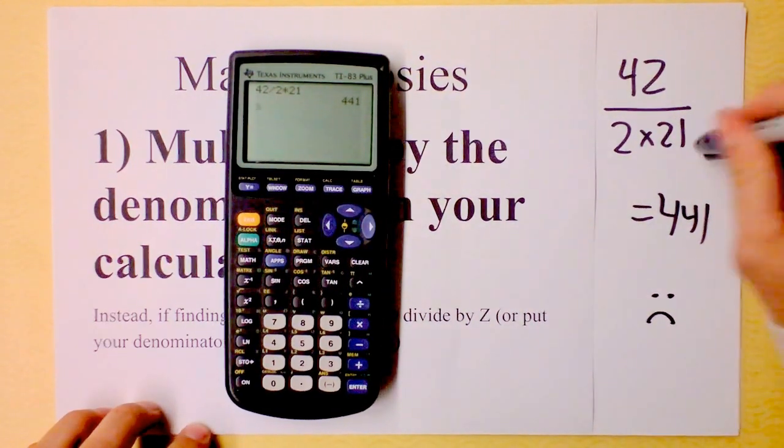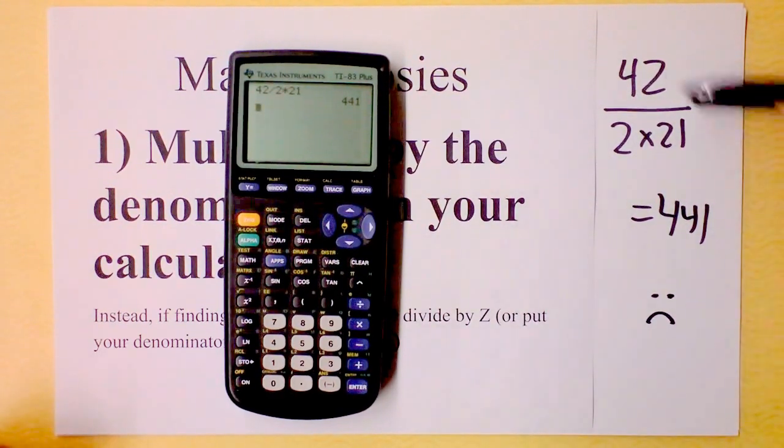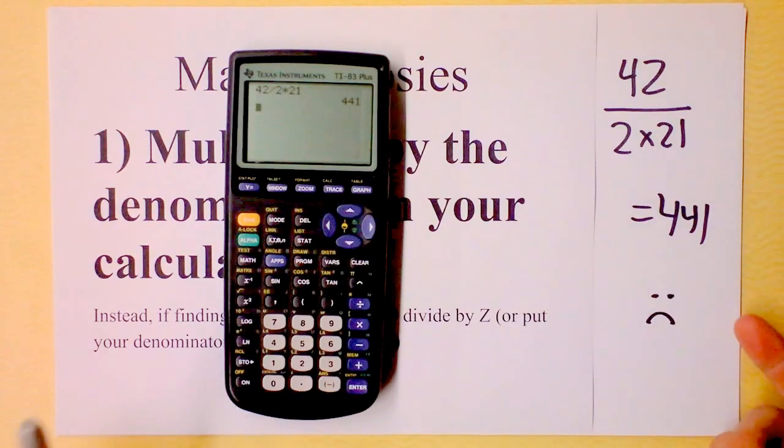It's supposed to be, well, less than 42, definitely, right? And probably a lot like 1, right? Not 441. So what went wrong here?